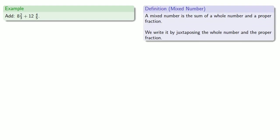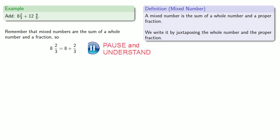The important thing to remember is that a mixed number is the sum of a whole number and a proper fraction. So 8 2/3 is really the same as 8 plus 2/3, and 12 4/5 is the same as 12 plus 4/5.